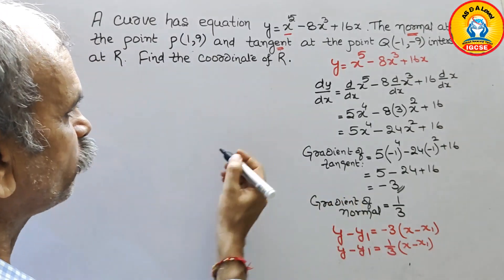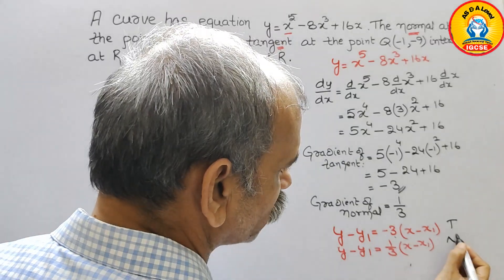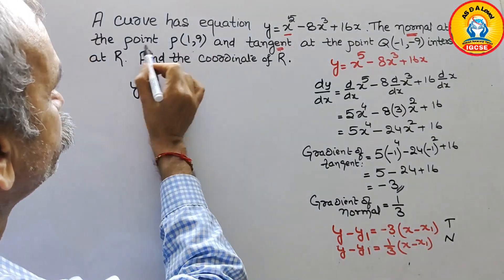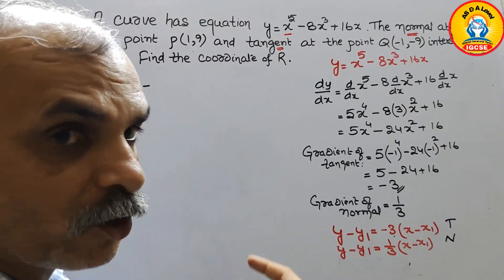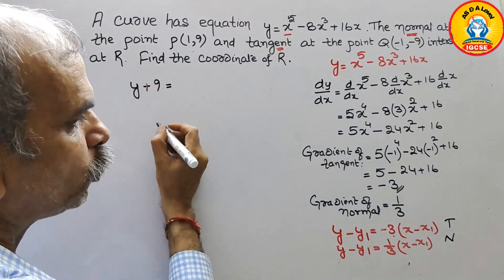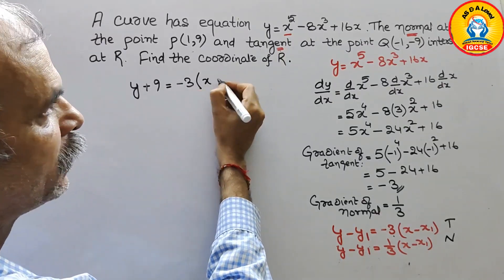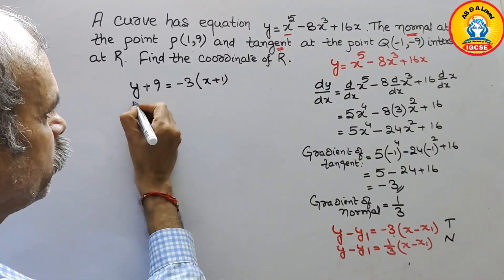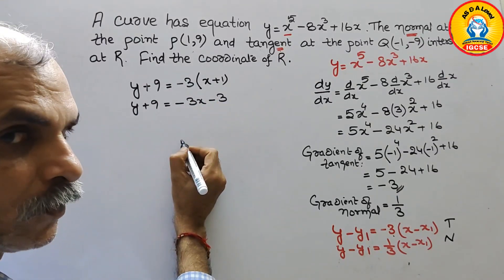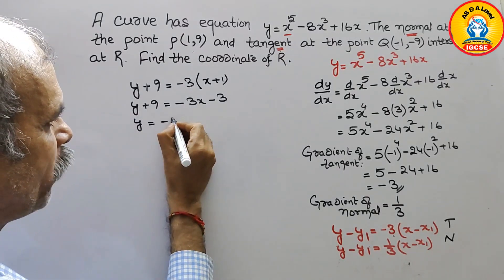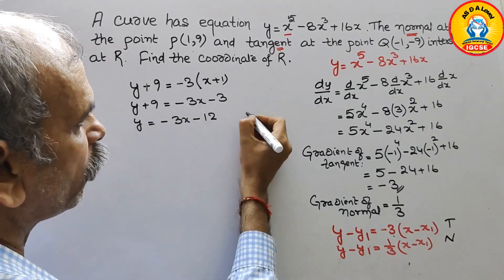For the tangent at Q(-1, -9): y - (-9) = -3·(x - (-1)), which gives y + 9 = -3(x + 1), so y + 9 = -3x - 3. Bringing 9 to the right side: y = -3x - 12. This is the equation of the tangent.